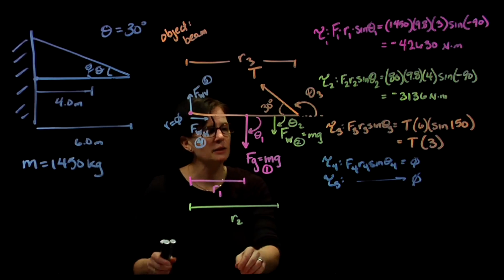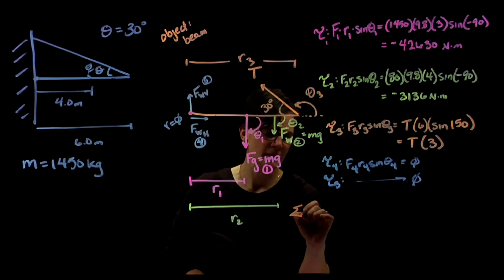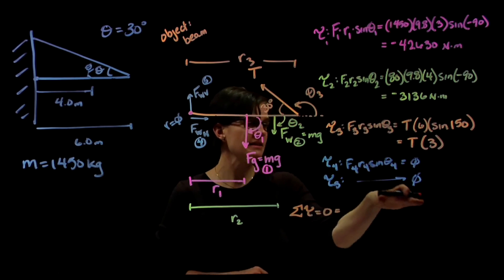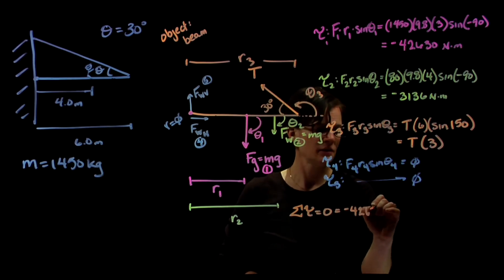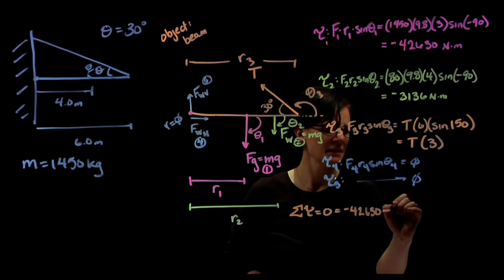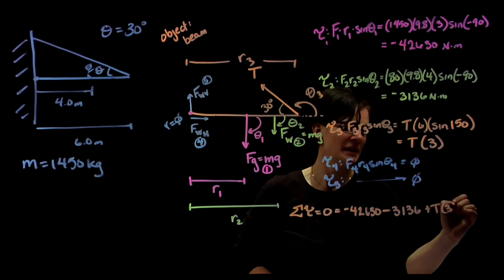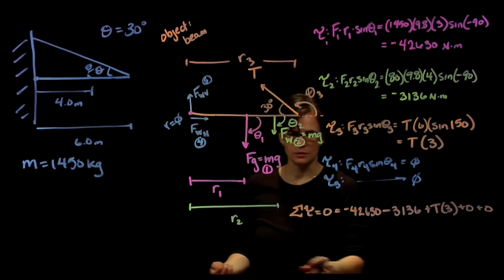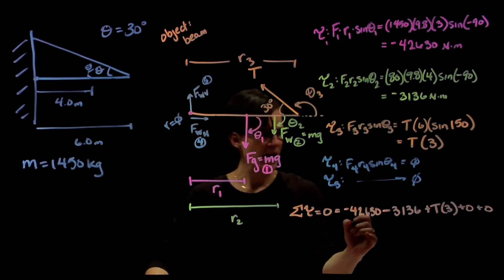If this object is in static equilibrium, that tells us that the sum of the torques are equal to zero. So if I were to add all these together, they should equal zero. Minus 42,630 minus 3,136 plus T times three plus zero plus zero, all of those should equal zero. So I have negative 45,766 plus T times three.